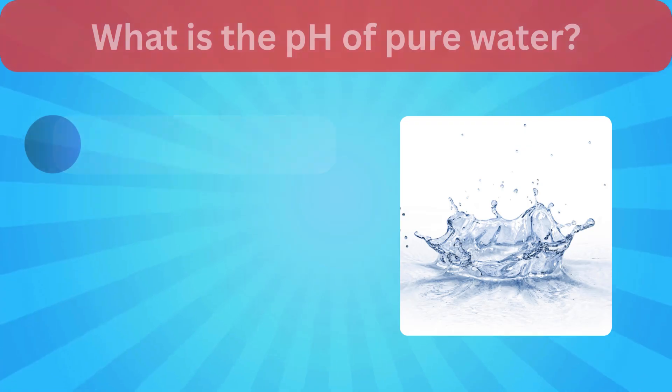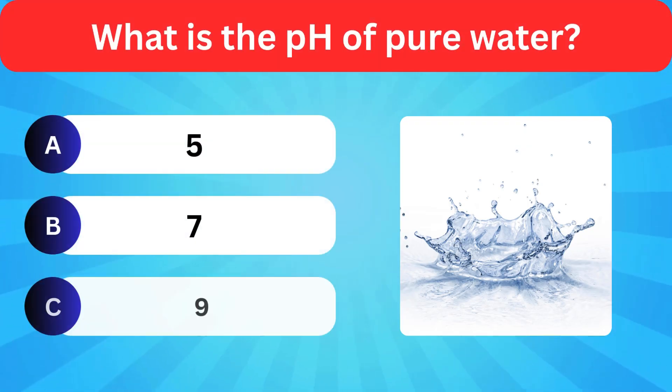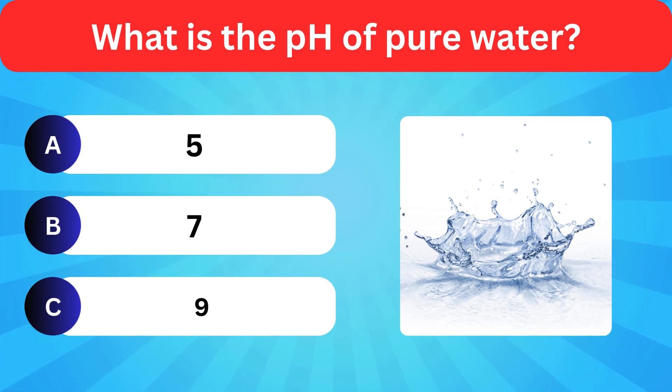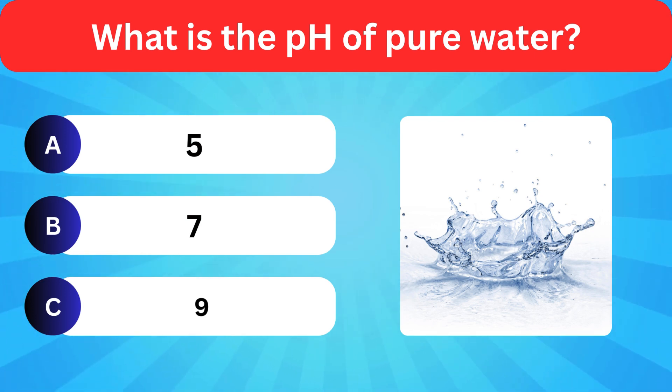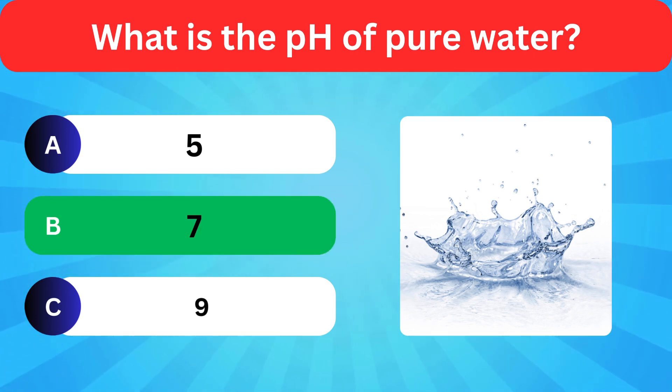What is the pH of pure water? Options: 5, 7, 9. Correct answer is 7.